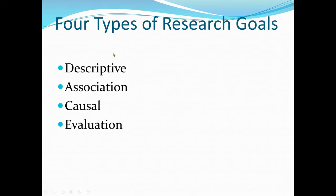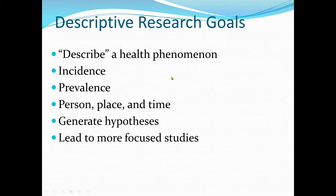There are four types of research goals: descriptive, association, causal, and evaluation. A descriptive research goal is intended to describe the health phenomenon in terms of its distribution across person, place, and time. The health program is typically measured as incidence and prevalence. The main goal of descriptive research is to describe the health phenomenon, not to find or analyze the relationship between exposure and outcome or risk factors and disease, but rather to understand the health phenomenon.